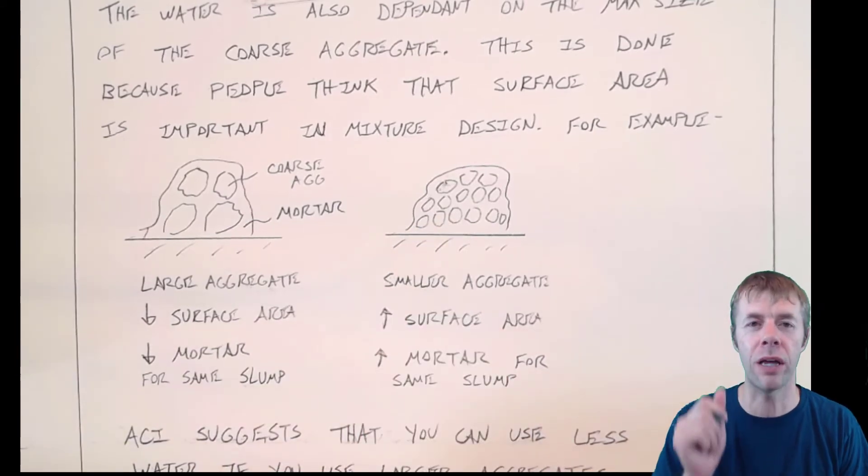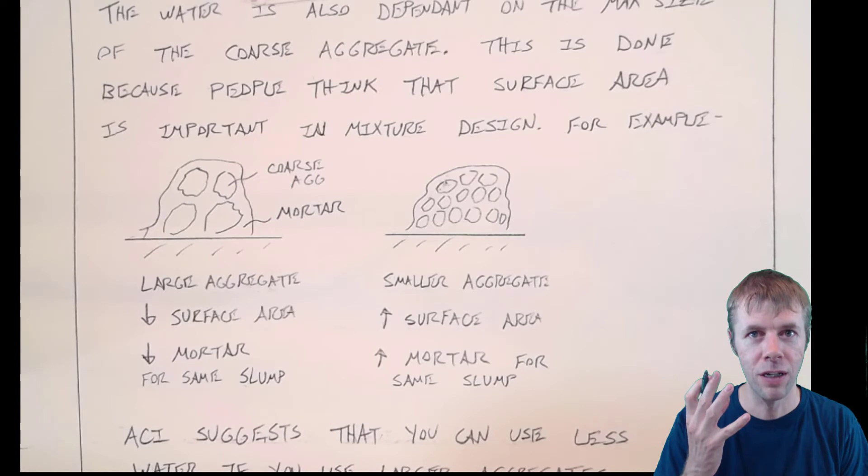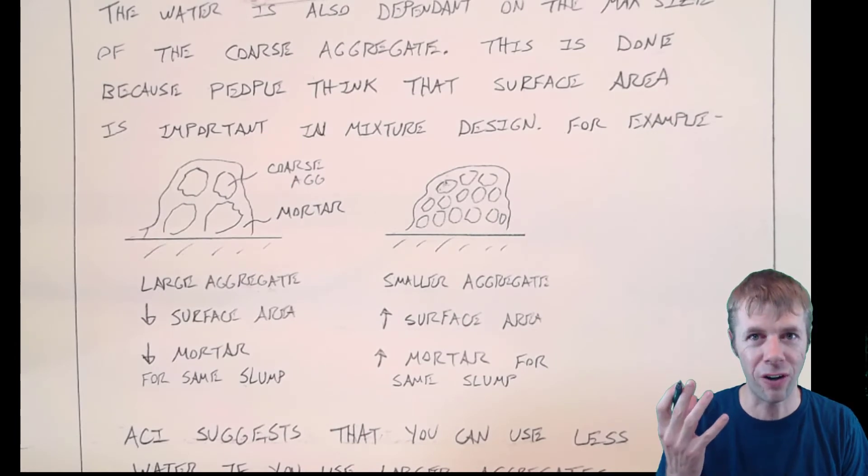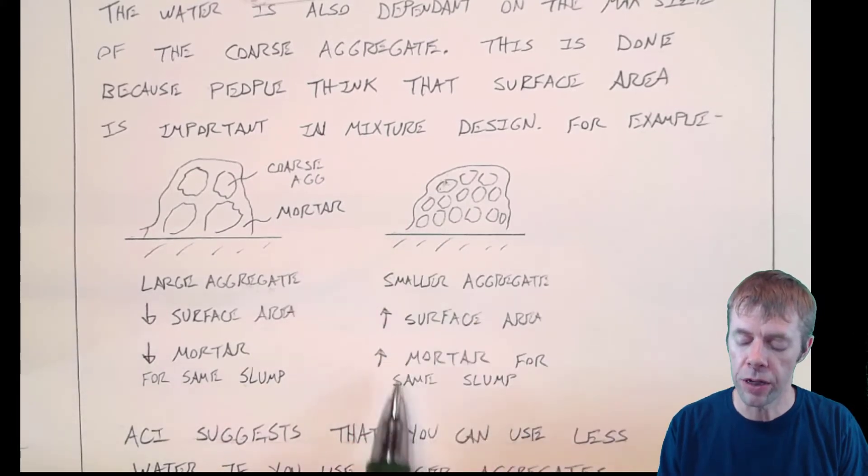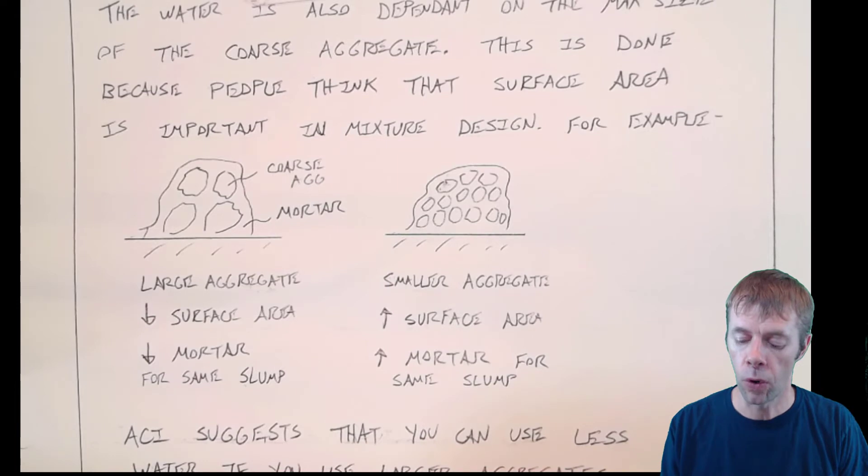And here this one because of a higher surface area people would think that you would need a higher mortar for the same slump. The thought is that the mortar needs to coat all of these particles because the particles don't really touch inside the concrete. They're kind of like floating. It's like a suspension. It's like something floating in the water. It's crazy but it's floating inside mortar.